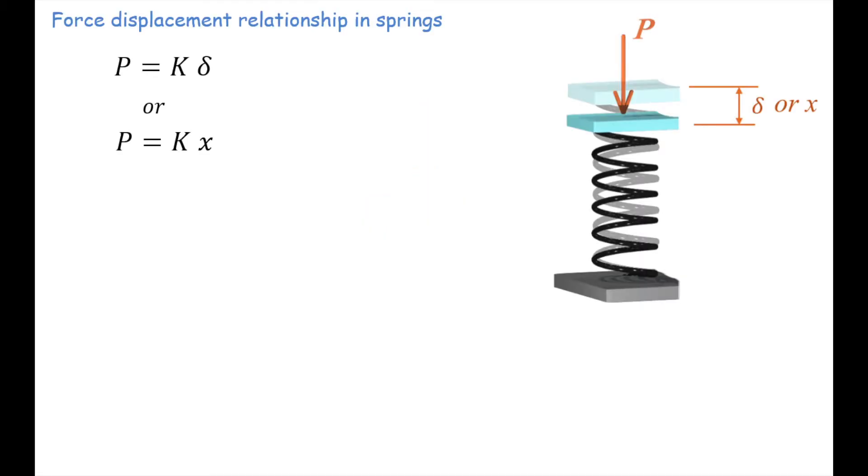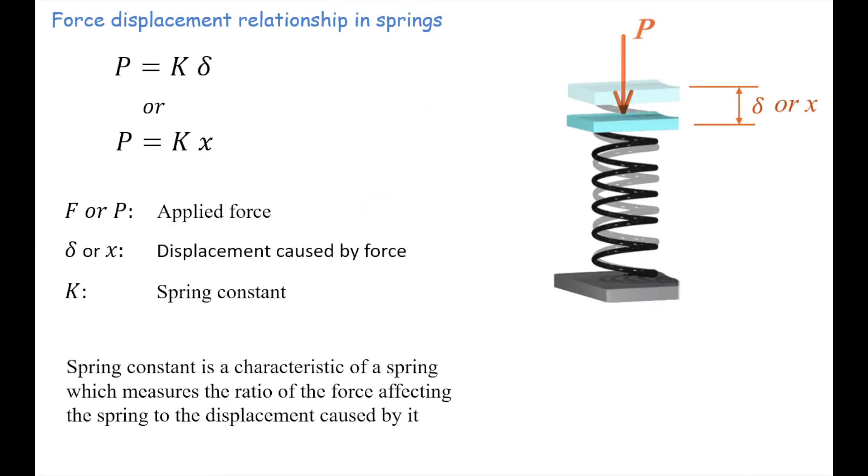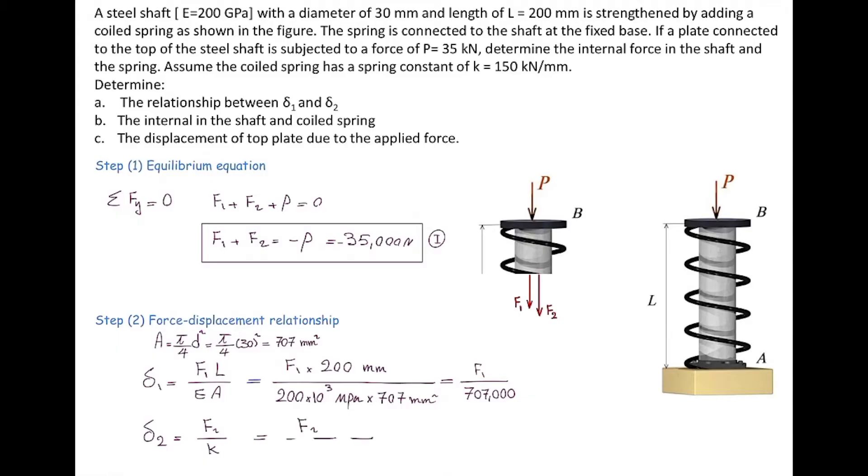In other words, deformation is equal to force divided by spring constant. So I'm going to write this down here. F2 is unknown, and spring constant is given to be 150 kN over millimeter or 150,000 N over millimeter.